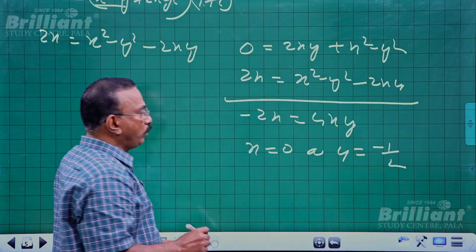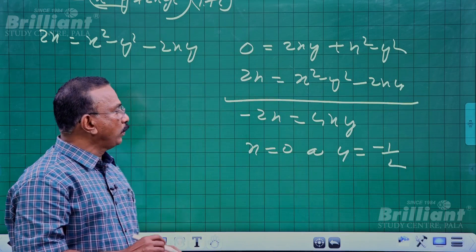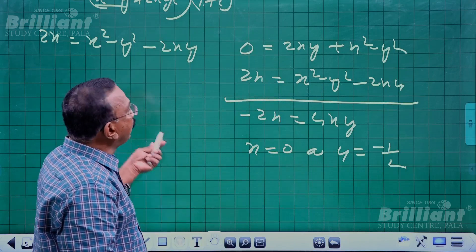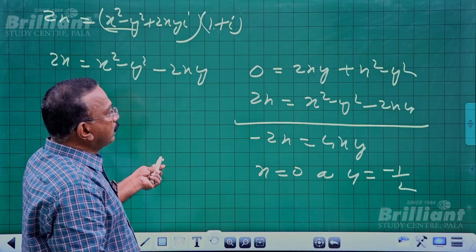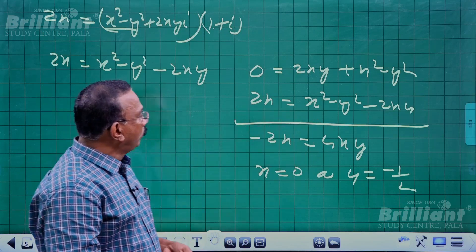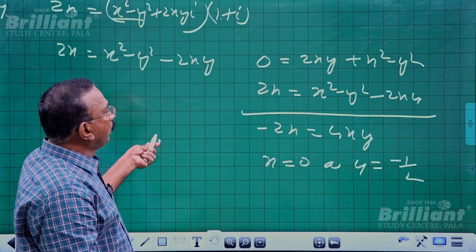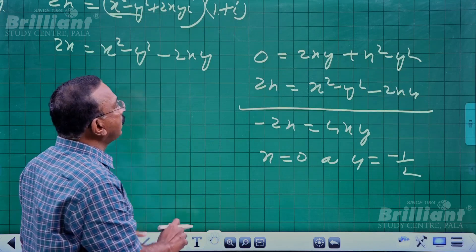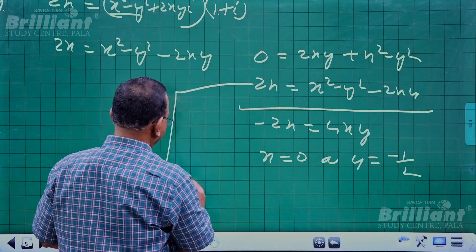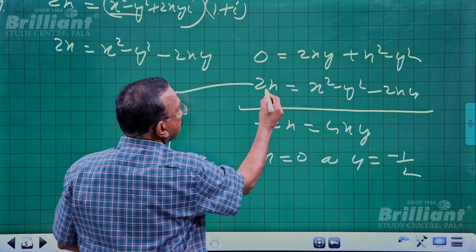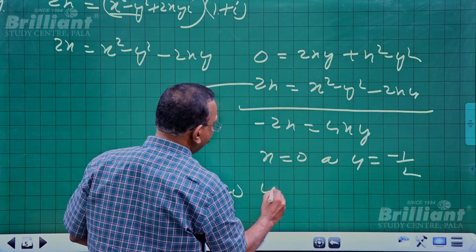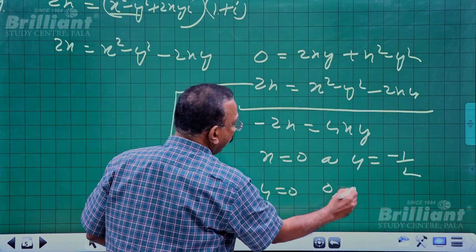When x = 0, substituting into the imaginary equation gives y = 0. So one solution is the origin (0, 0).